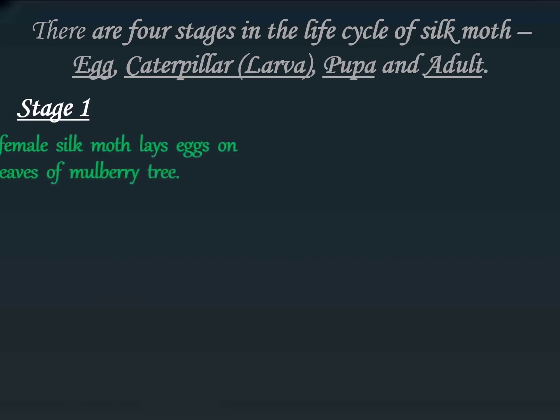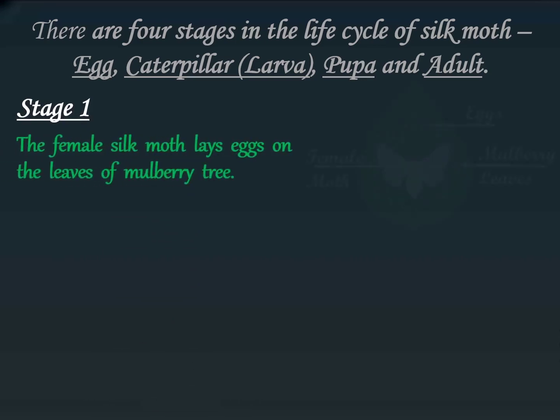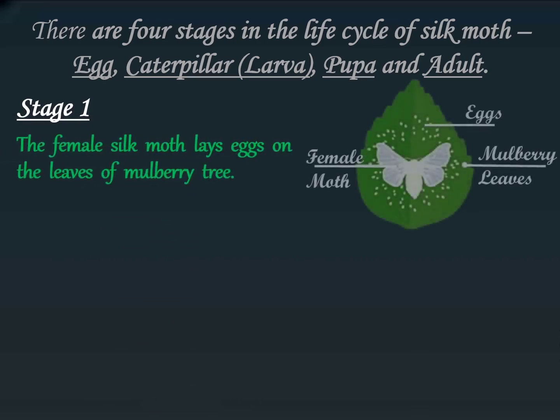Stage 1: The female silk moth lays tiny microscopic pale yellow eggs on the leaves of a mulberry tree at the end of summer.